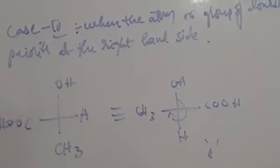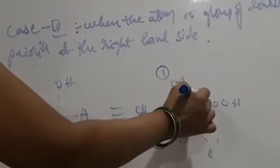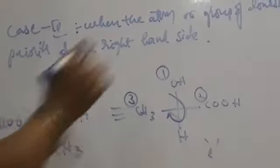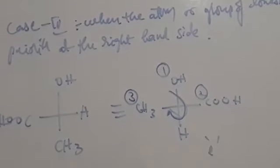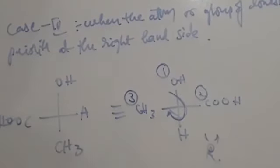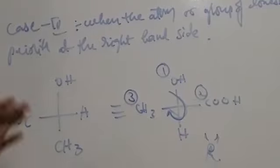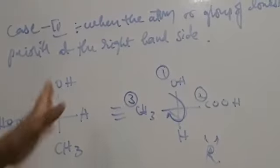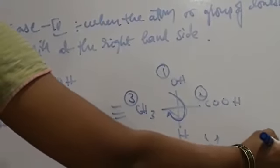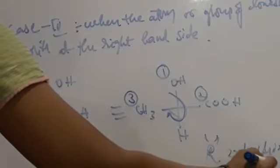Now we have to assign the priority — 1, 2, 3 — rotation is in clockwise direction, so this is R notation. Notation is given as R, so 2-hydroxypropanoic acid is R — R, 2-hydroxypropanoic acid.